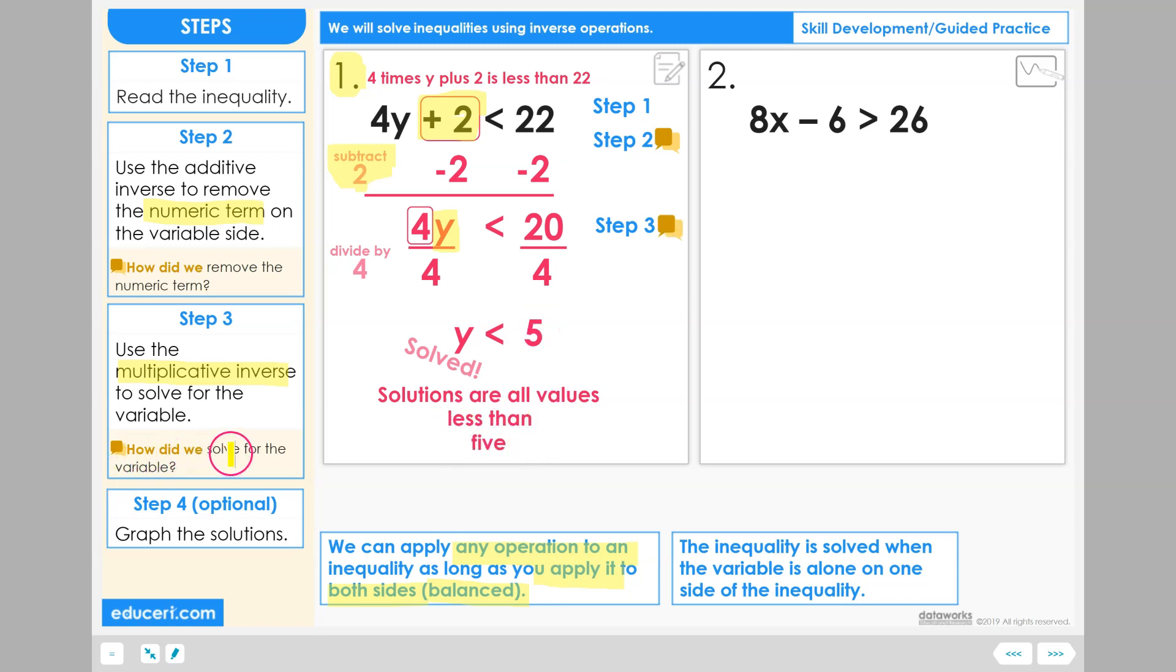How did we solve for the variable? After removing the numeric term, having 4y is less than 20, we solved for the variable by using the multiplicative inverse on both sides of the inequality, which in this case was 4. 4 divided by 4 equals 1, so we have just 1y, and the inequality was solved because the variable y was all alone on that side of the inequality.